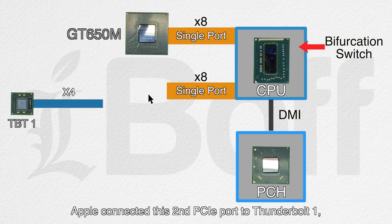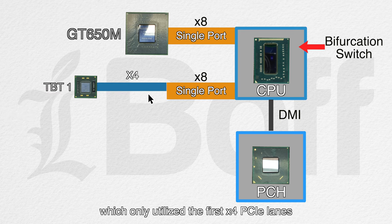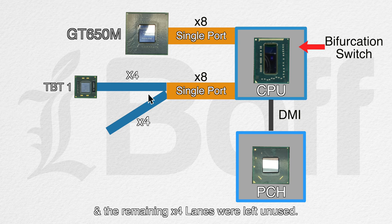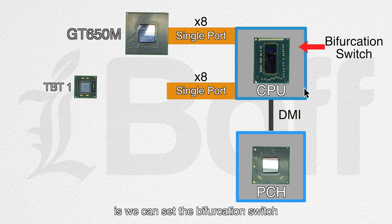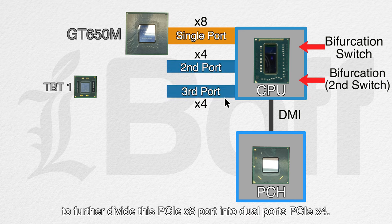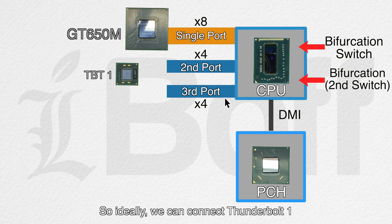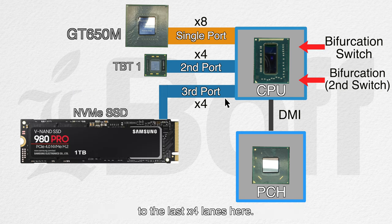This configuration was also quite popular back in 2013 for connecting two GPUs for SLI or Crossfire setup. But for this 2012 MacBook Pro, instead of connecting a secondary GPU, Apple connected this second PCIe port to Thunderbolt 1, which only utilized the first 4 PCIe lanes and the remaining 4 lanes were left unused. The final option is to set the bifurcation switch to further divide this PCIe X8 port into dual ports PCIe X4, so ideally we can connect Thunderbolt 1 at the first 4 lanes and an NVMe SSD to the last 4 lanes.